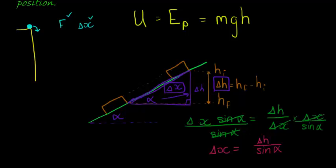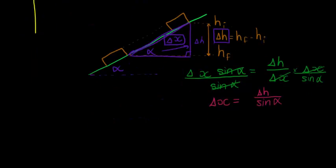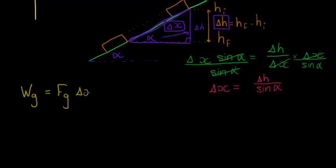What I'm trying to work out now is: what is the work done by the gravitational force? The work formula doesn't change. The work done by the gravitational force equals the gravitational force times the change in displacement, multiplied by the cosine of the angle between the displacement and the gravitational force. So what is that angle between displacement and gravitational force? We'll look at that in just a minute.